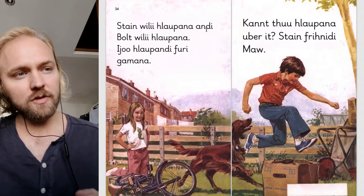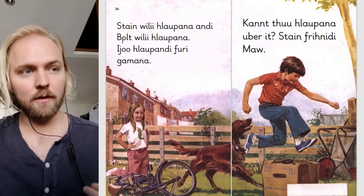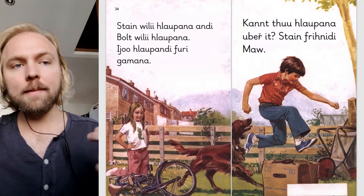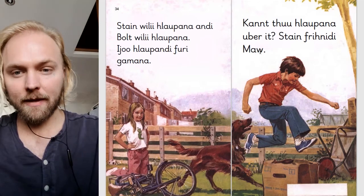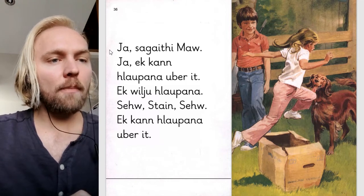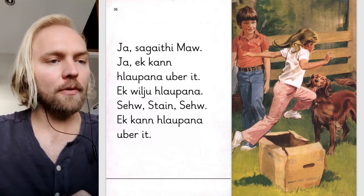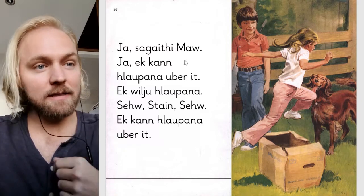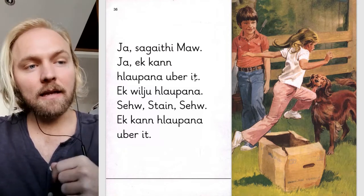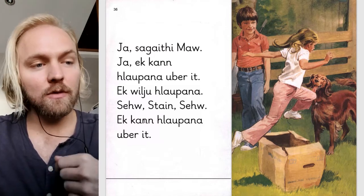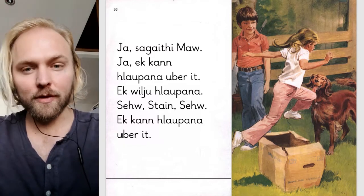Stone wants to leap and bolt wants to leap — they leap for fun. 'Can you leap over it?' Stone asks May. 'Yes,' says May. 'Yeah, I can leap over it, I want to leap.' See, 'I can leap over it' — stone, see, I can leap over it.